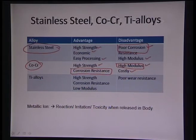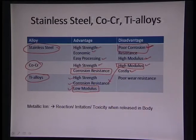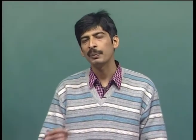The poor corrosion resistance of stainless steel is negated by cobalt-chromium alloys, which have high strength and at the same time very high corrosion resistance, but they also face the same problem of very high modulus. Since this is a specialty alloy, cobalt and chromium are very costly, bringing the cost very high. Titanium alloys come in with high strength, high corrosion resistance, and low modulus, negating the previous disadvantages, but titanium alloys show poor wear resistance.